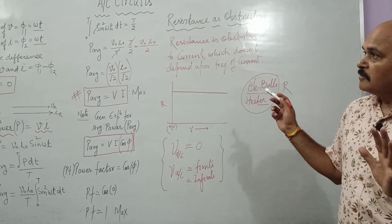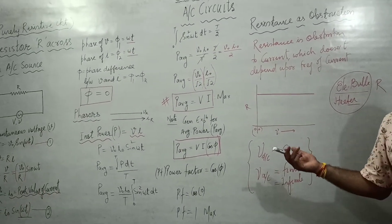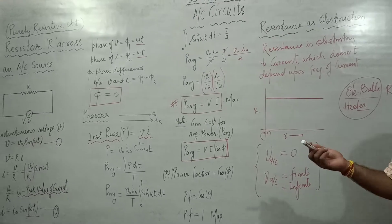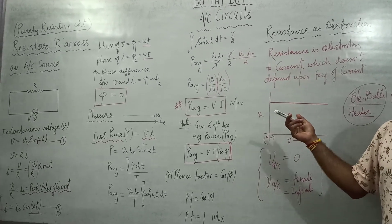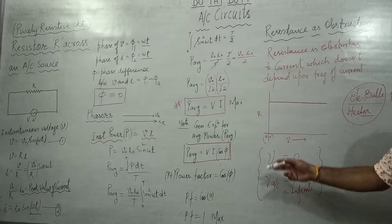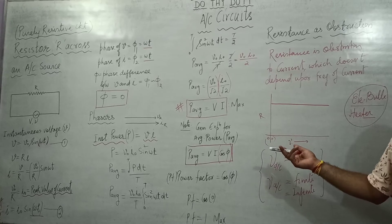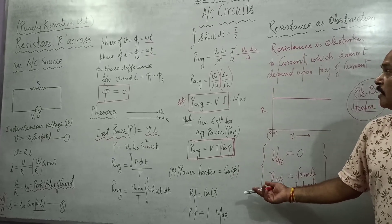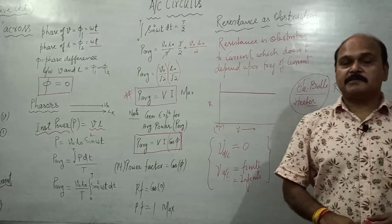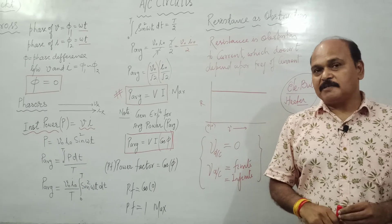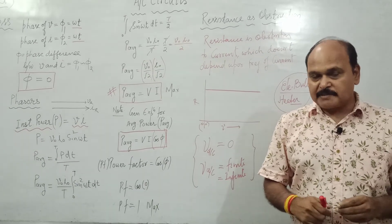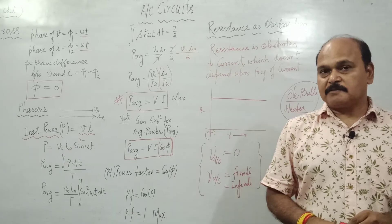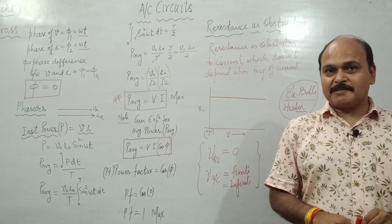So this was the behavior of a resistor across an AC source. We have come to know new concepts: the phase difference between voltage and current is zero, we have drawn phasors, found the average power is maximum due to maximum power factor, and redefined resistance as a frequency-independent obstruction. We will continue with the behavior of inductor and capacitor in the coming classes. Thank you very much and God bless you all.